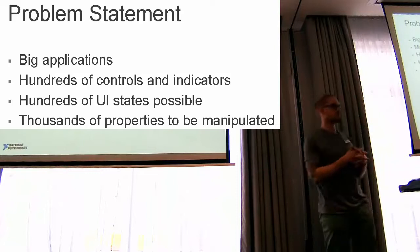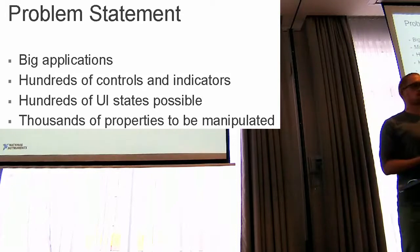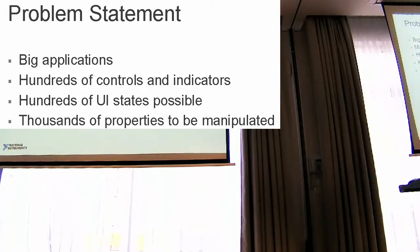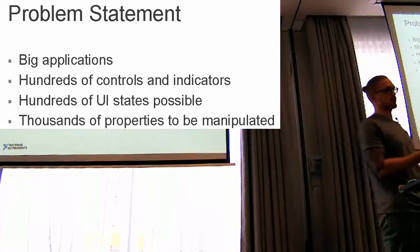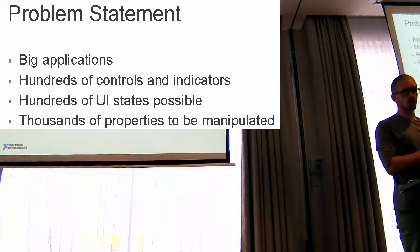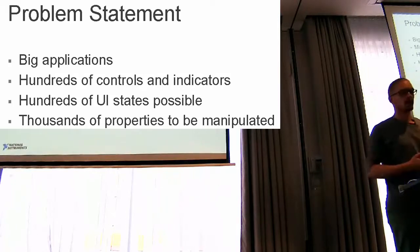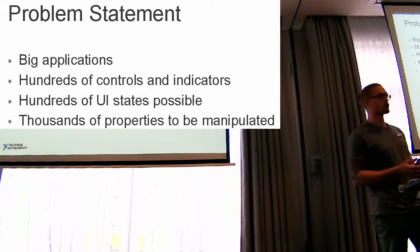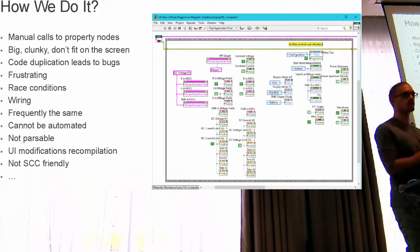So the problem statement is this. You've definitely worked on many big applications that have many controls and indicators on many user interfaces, and there came a point where you needed to switch the user interface — let's say from mode 1 to mode 2, like from an operator UI to a technician or debug UI — and there were all these property nodes involved in doing that. The problem: you have many UIs, hundreds of controls and indicators on each, many tens or hundreds of UI states, and that equals thousands of properties that need to be manipulated.